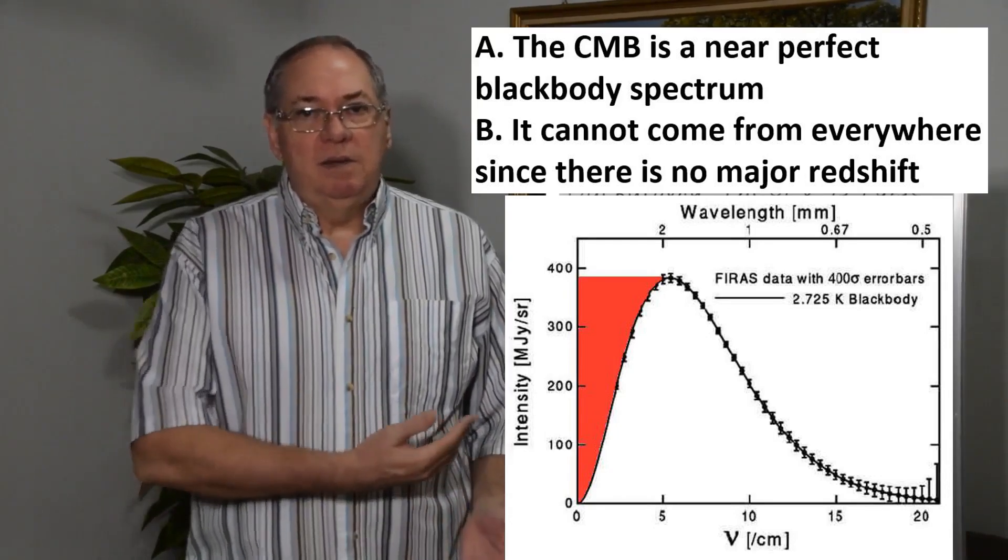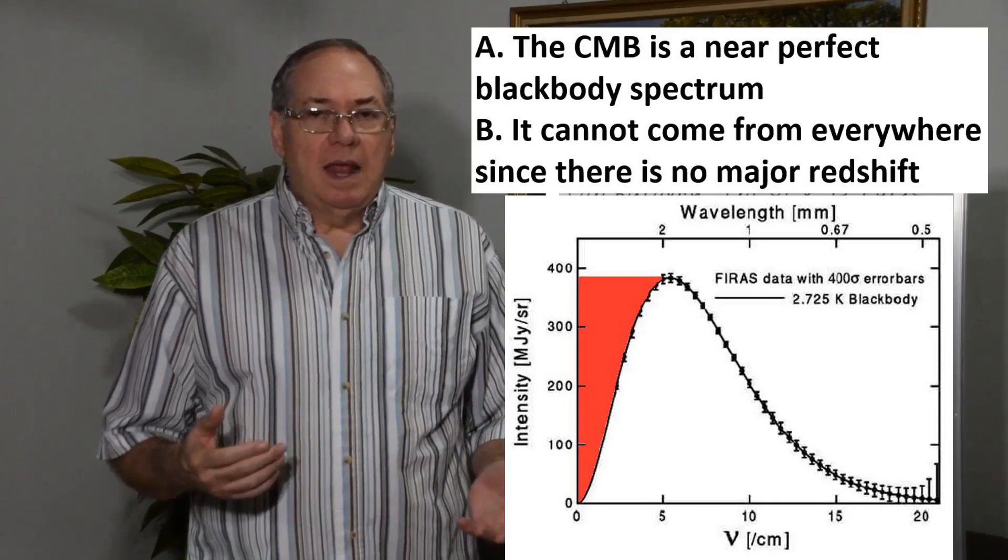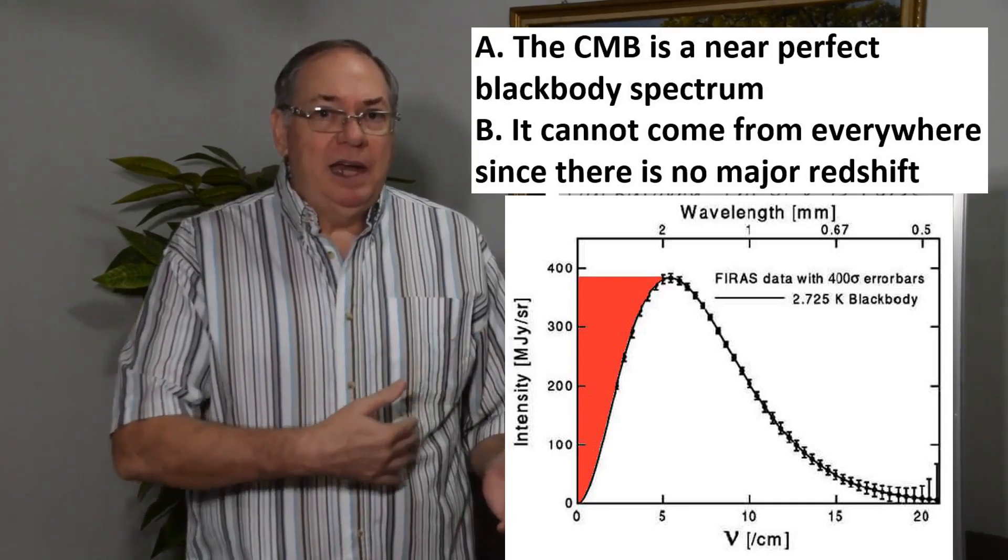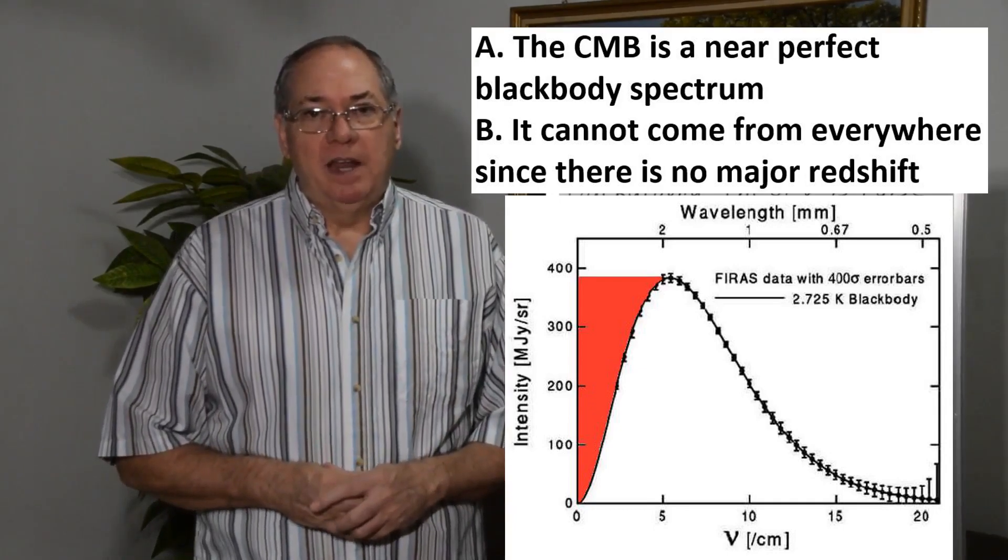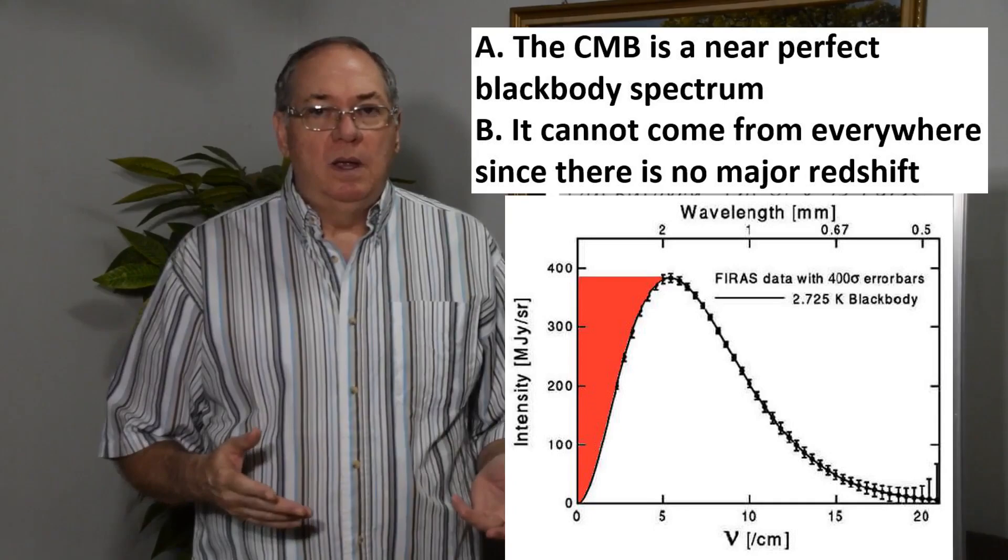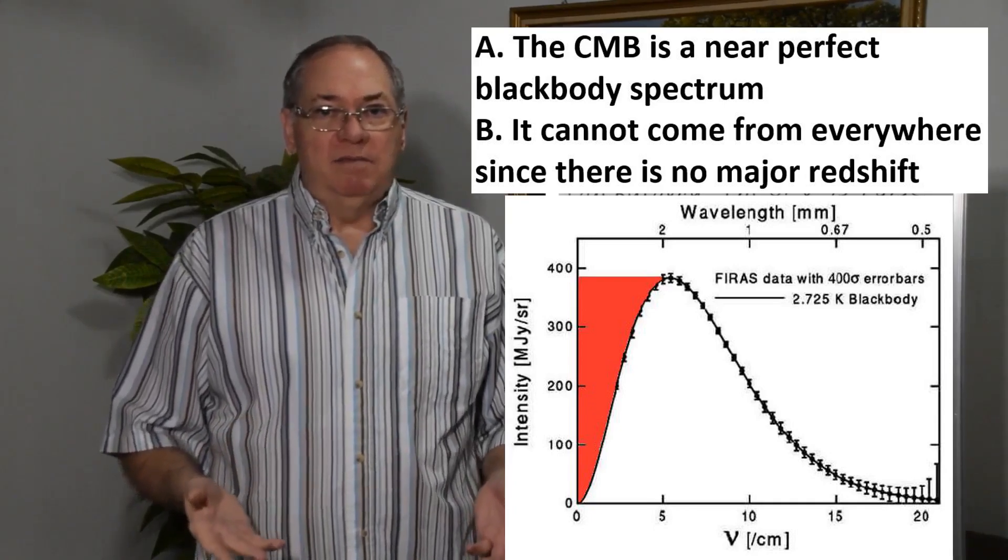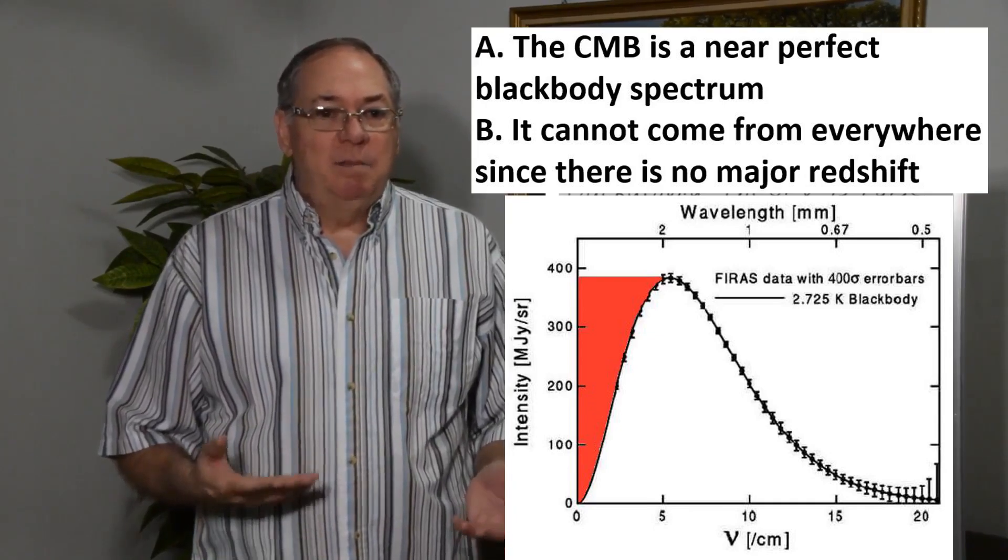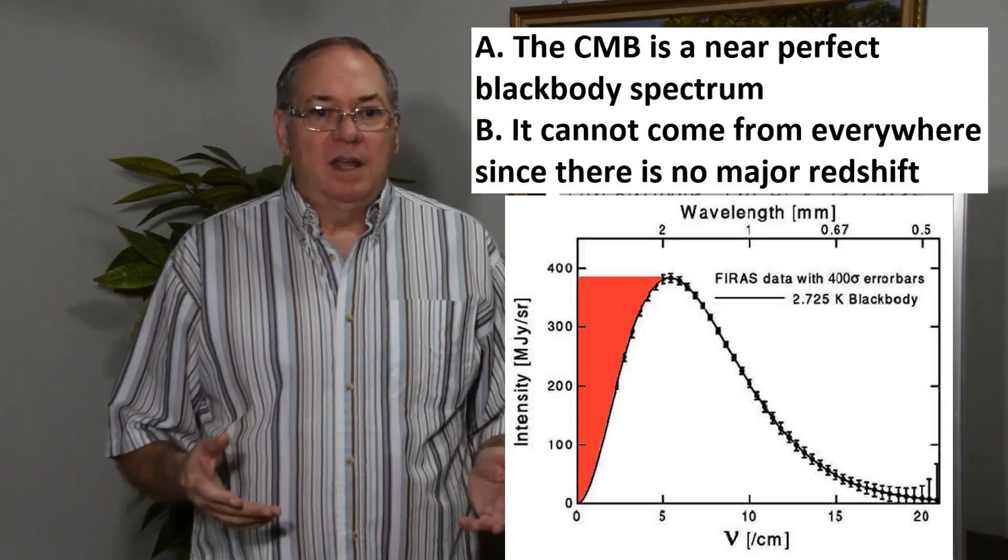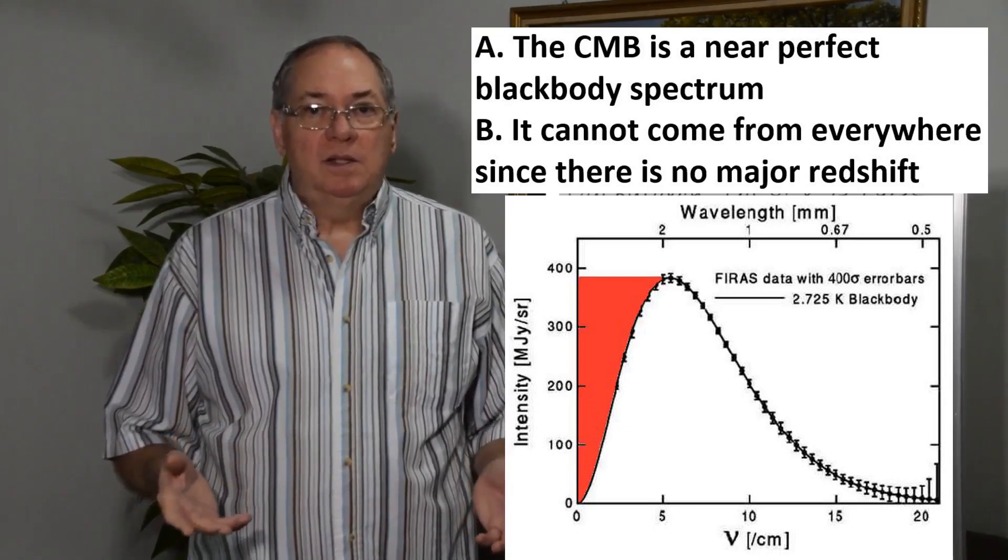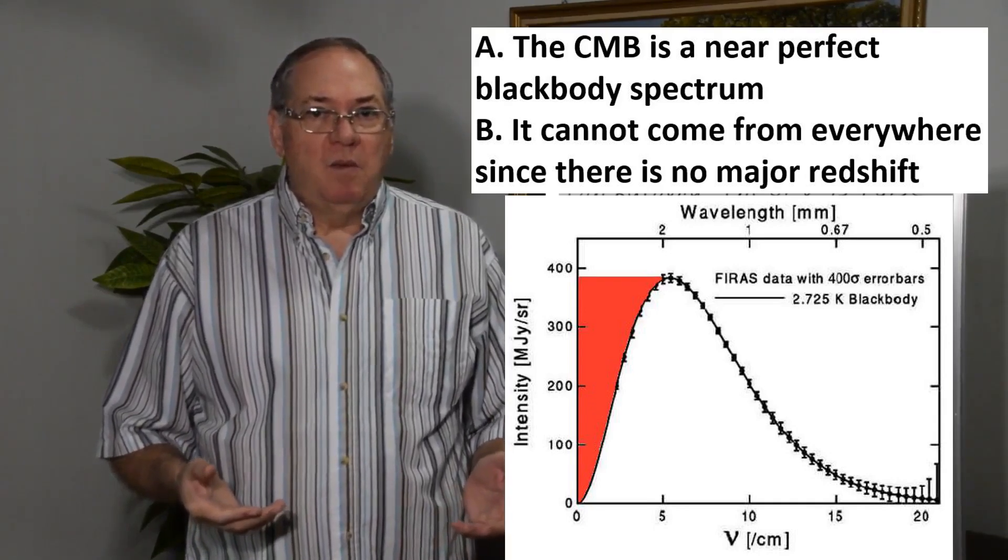If it was redshifted in this image in my direction, then you would have a smearing of the spectrum. It wouldn't be this perfect blackbody radiation. So we don't know how we have the spectra with no redshift. It's a big problem. And if you want to say that the microwave background is coming from everywhere in the universe all at once, we should see redshift. So it can't be.